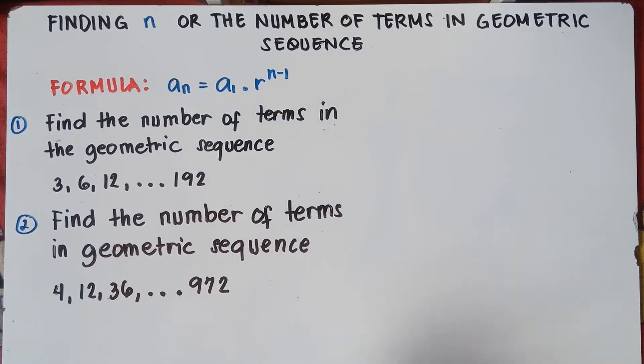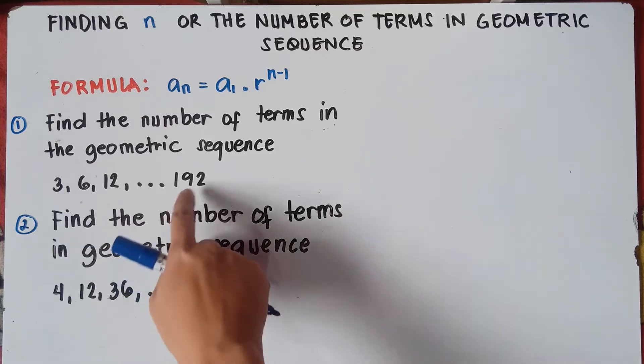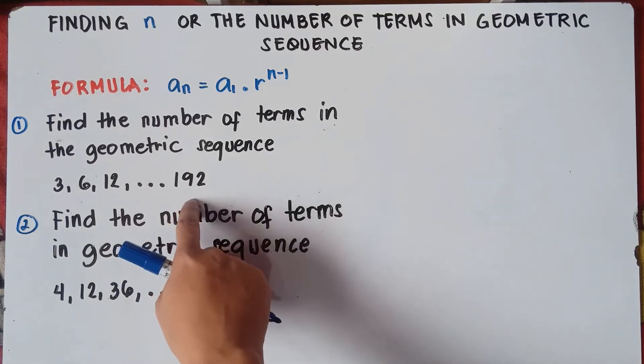Find the number of terms in the geometric sequence: 3, 6, 12, and the last term is 192.